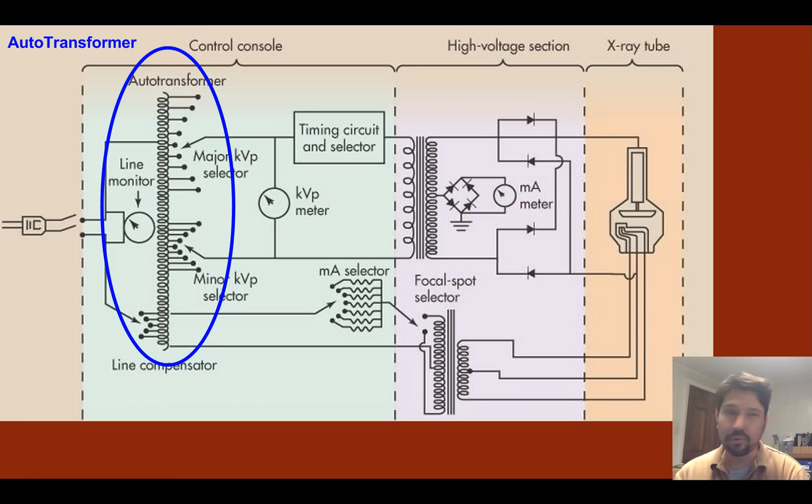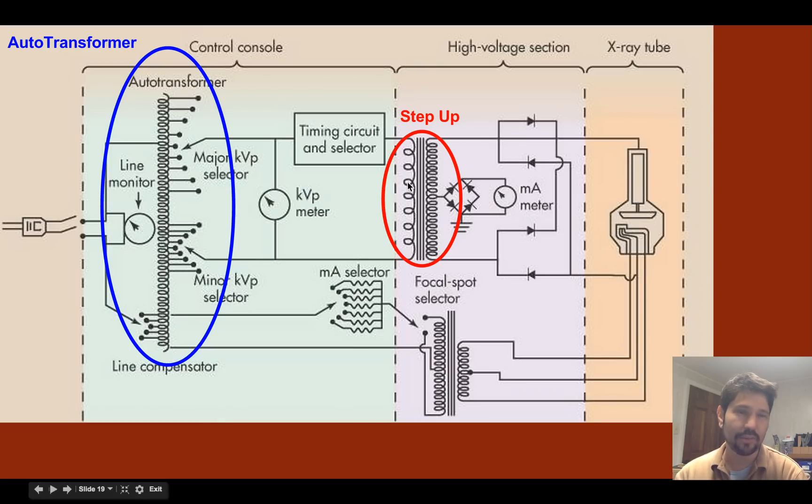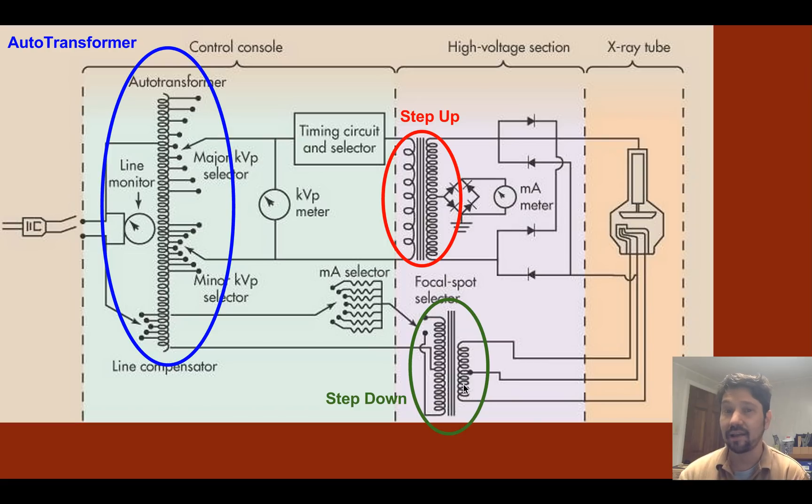Then after we pre-select that range of voltages, we run it through our step-up transformer to go from like 80 volts to 80,000 volts. We also have our step-down transformer where we go from a large number of coils to a few number of coils to step down the voltage, and that will increase our current. Because if you increase your voltage you decrease your current, and if you increase your current you decrease your voltage. It's part of the no free lunch rule.